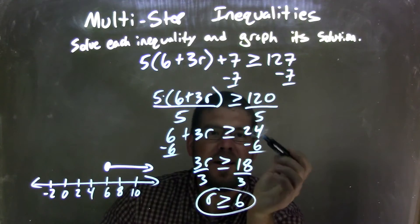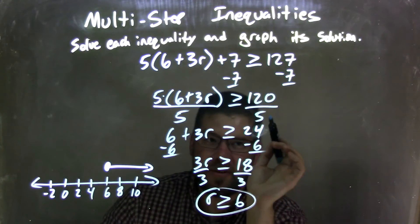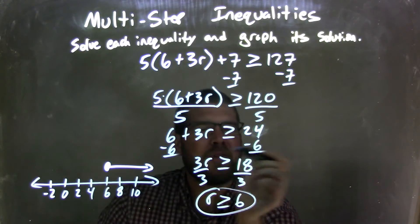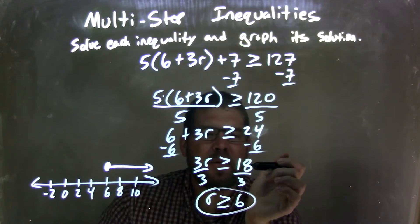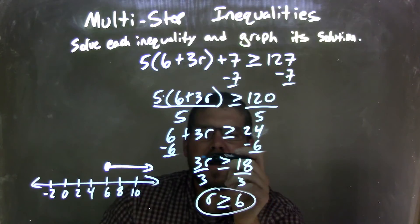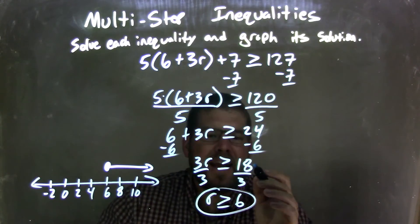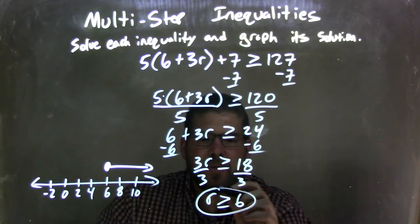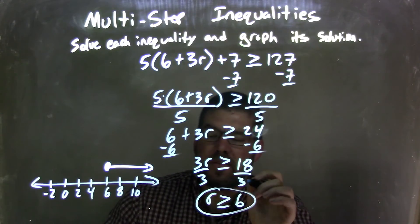I subtracted 6 from both sides—or sorry, 24, not 25, but 24, okay? Subtracted 6 from both sides, giving me 18 on the right and 3R on the left, and still have it greater than or equal to sign in the middle. Divided both sides by 3, giving me R by itself, and 18 divided by 3 is 6, so we have R is greater than or equal to a positive 6.